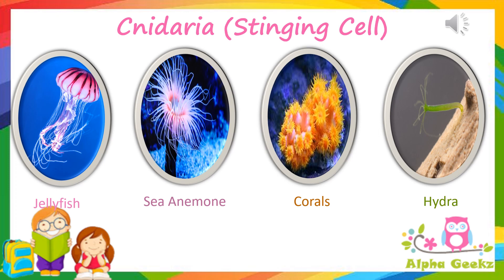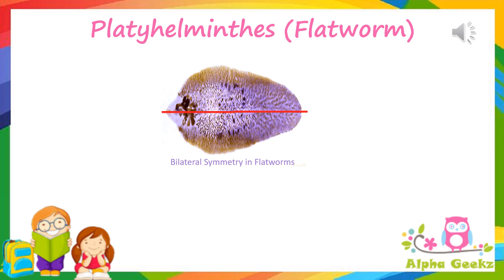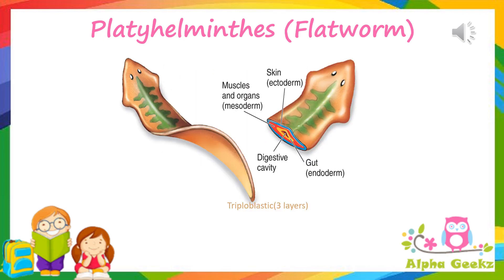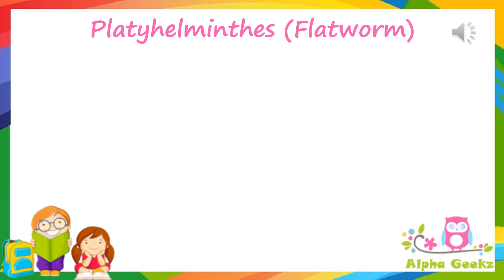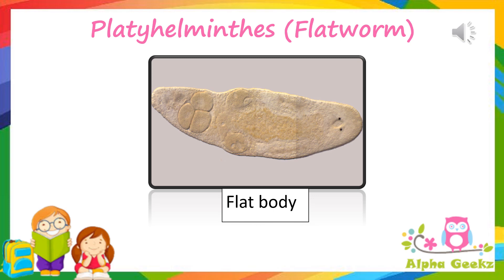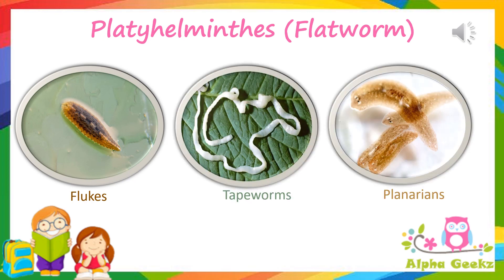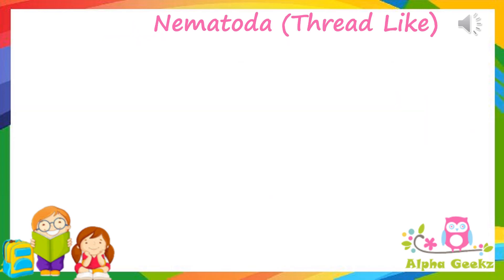Platyhelminthes: the simplest animals that are bilaterally symmetrical and composed of three fundamental cell layers are the Platyhelminthes. These are one of the phyla under the kingdom Animalia. They are also known as flatworms. They lack a true body cavity and are unsegmented, soft-bodied invertebrates which have a flat body from head to tail. Examples of Platyhelminthes are flukes, tapeworm, and planarians.